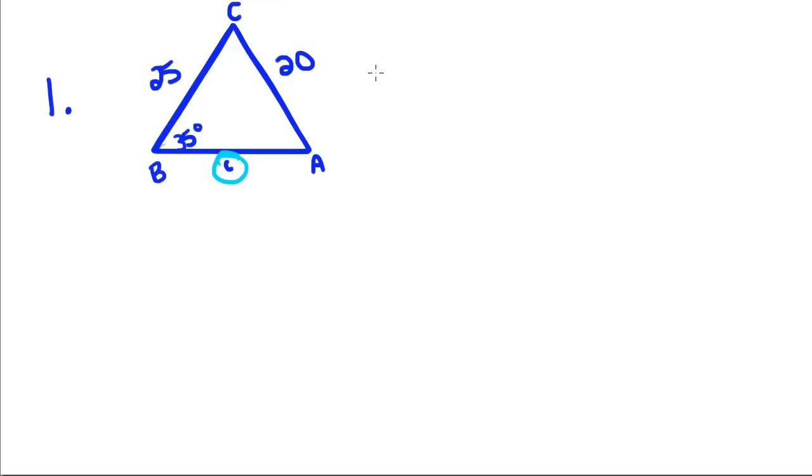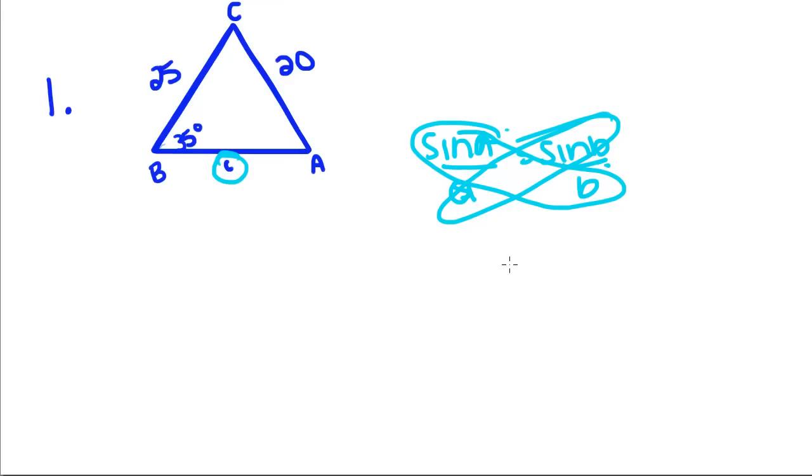we don't have to have all three things equal. As long as we have sine of A over A equals sine of B over B, and then we can cross multiply to solve for them. So I'm just going to set up two equal fractions to cross multiply.